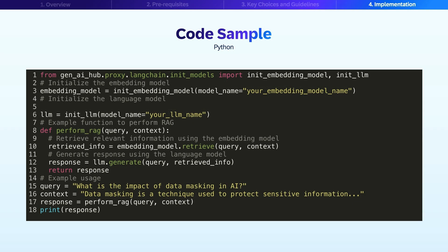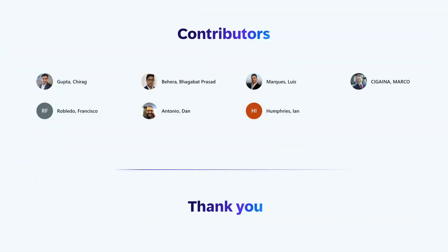This concludes our session on the query pipeline when using Vector-based RAG. We have covered the benefits of using RAG, the reference architecture, the prerequisites, implementation steps, key decision factors, and implementation guidelines with a practical code example. This best practice guide reflects the collective expertise of AI specialists from across SAP. Thank you for watching this session on Vector-based Retrieval Augmented Generation query pipelines. We hope the information provided helps you successfully implement AI capabilities in your business applications.